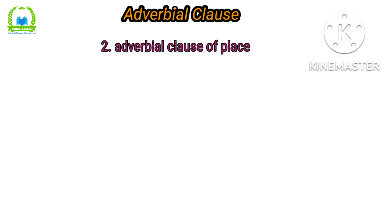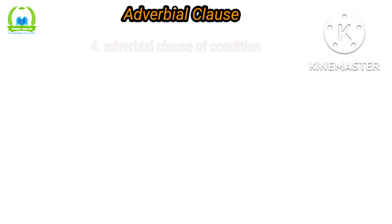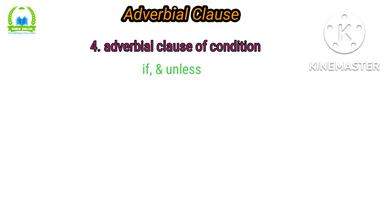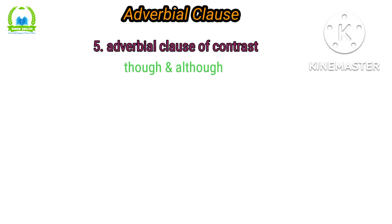The second type is the adverbial clause of place, using where and wherever. Third is the adverbial clause of reason, using because, as, since, and for. Fourth is the adverbial clause of condition, using if and unless. Finally, the adverbial clause of contrast uses though and although.